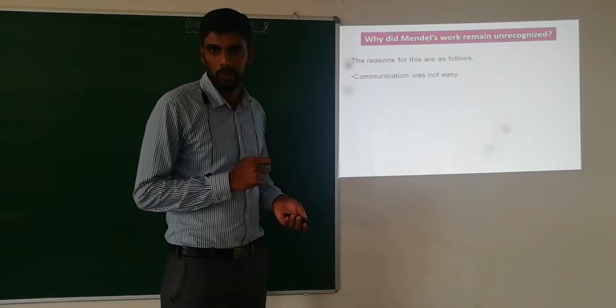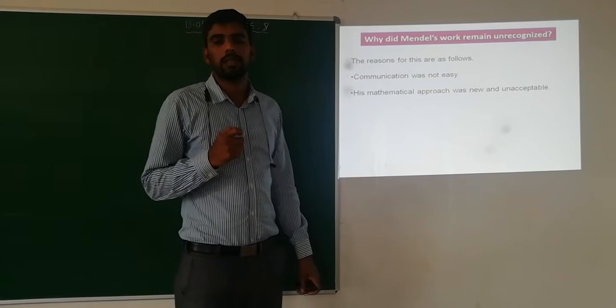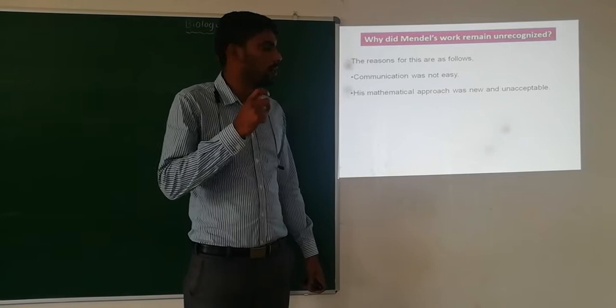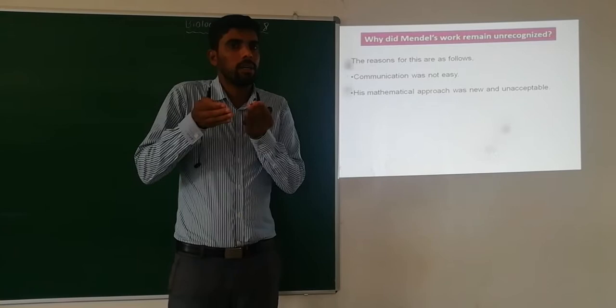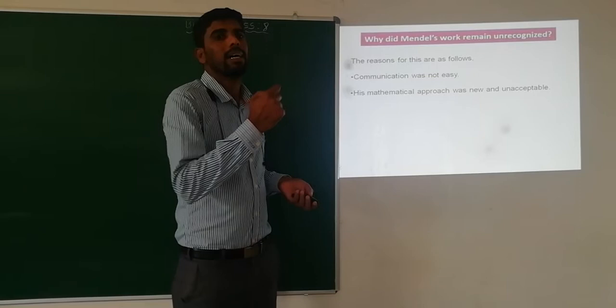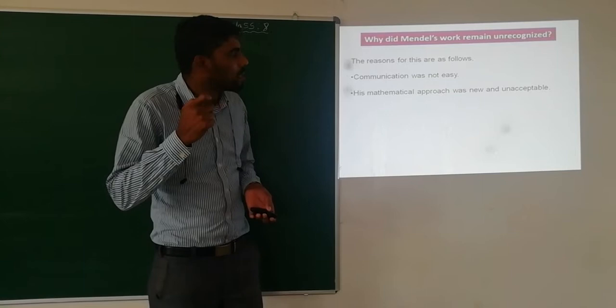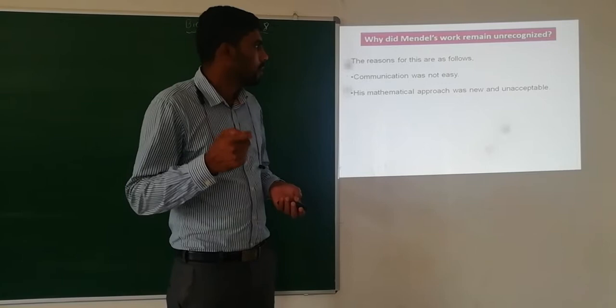The second point is that the mathematical approach was new and unacceptable. Because basically Mendel was a mathematician, he introduced mathematical logic and statistics in biology. He used ratios like 3:1 and 9:3:3:1. Some biologists and botanists were not convinced with that mathematical approach, and it is also one of the drawbacks.